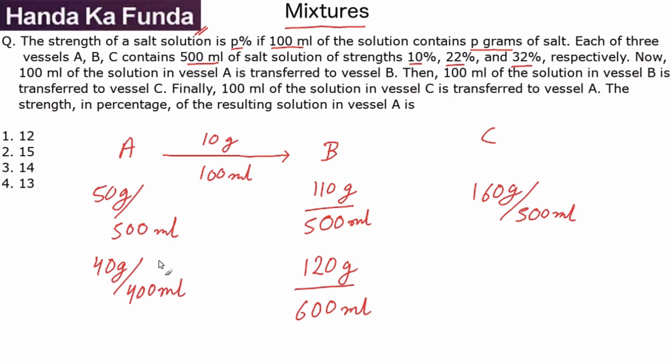So this is what happens in the first transaction: this goes from 50 to 40, this goes from 110 to 120. Then what do we do? Then 100 ml of the solution in vessel B is transferred from B to C. When you are transferring 100 ml it is not one-fifth of the solution but it is one-sixth of the new solution.